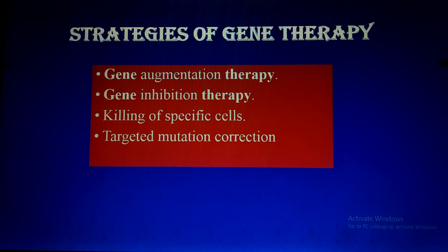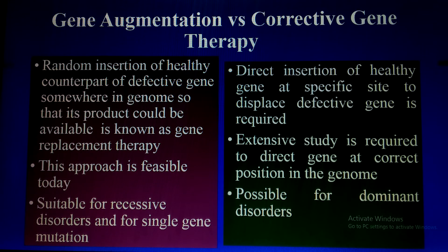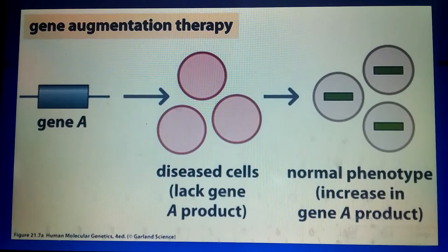Gene therapy strategies include: gene augmentation therapy, gene inhibitor therapy, killing of specific unhealthy cells such as in cancer and tumor cases, and targeted mutation correction. Gene augmentation — also known as gene replacement therapy — is the random insertion of a healthy counterpart of the defective gene somewhere in the genome. Corrective gene therapy is the direct insertion of the healthy gene at a specific site. Gene augmentation is feasible today and is suitable for recessive disorders and single-gene mutations, while corrective gene therapy addresses dominant disorders.